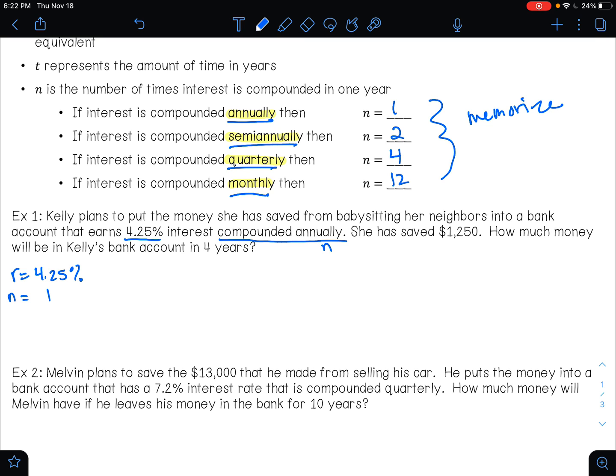She has saved $1,250. That's the principal amount. That is how much money Kelly is putting into the bank. And then it says, how much will be in Kelly's bank account in four years? So t is four. So we're going to be solving for A.